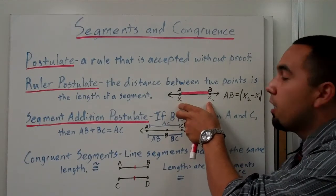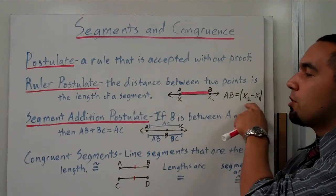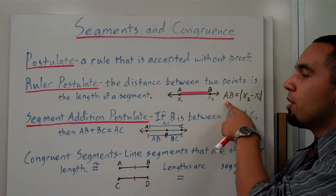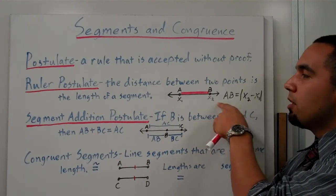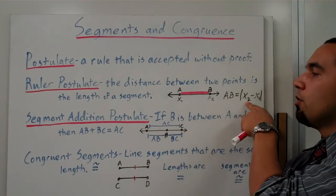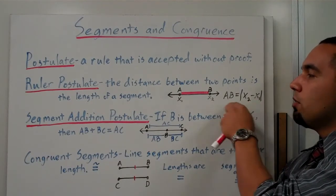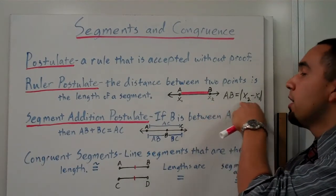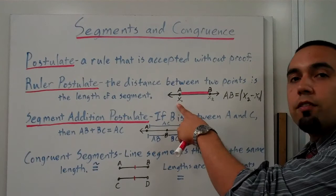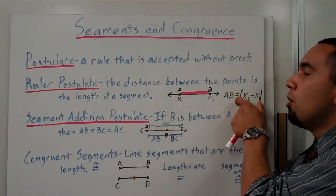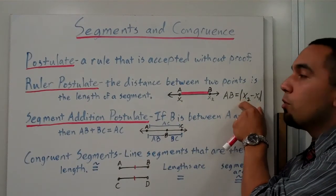Well, on a number line these numbers might be positive, they might be negative, so we have this equation right here that simply says if we're going to measure the length of a segment, in this case AB, we're going to take the absolute value of the second point and subtract the first point. That will always give us a positive value, which lengths or distances are always positive.